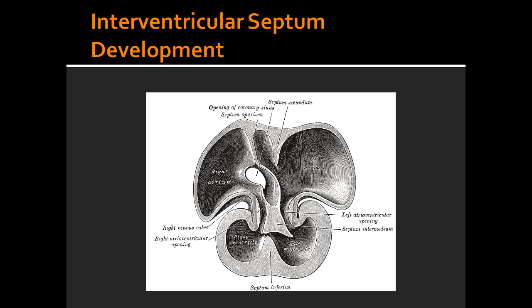Describe the second step in the interventricular septum development by looking at the picture on page 250, number 2. In the second picture, you see the apiseptum rotates and fuses with the muscular ventricular septum to form the membranous interventricular septum. It also closes the interventricular foramen.